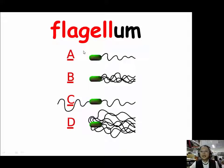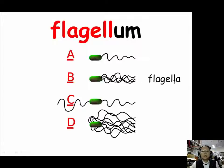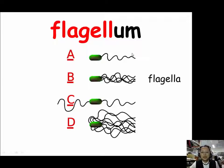In biology, a flagellum refers to a long whip-like, membrane-enclosed organelle used in locomotion or feeding. Flagellum is the singular form; the plural form is flagella (F-L-A-G-E-L-L-A). Some bacteria have only one flagellum, but many bacteria have more than one, so we say they have flagella.